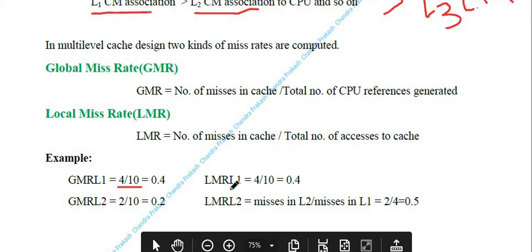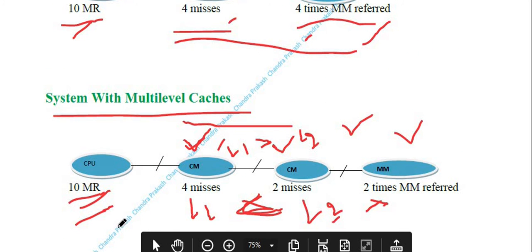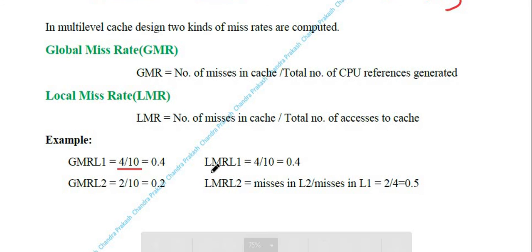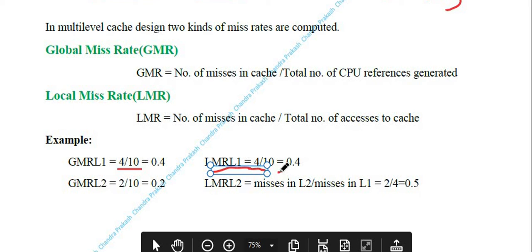Local miss rate is the number of misses in a cache divided by the total number of accesses to that cache. For L1 cache, total memory requests are 10, and all 10 are first accessed in L1. Out of 10 accesses, 6 are hits and 4 are misses. So local miss rate for L1 = 4 / 10 = 0.4 as well.